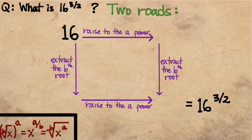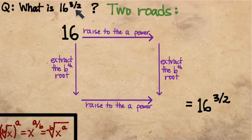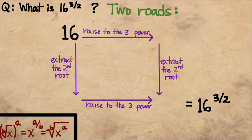But the path that we walk down is very different depending on how we do this. So let's apply it to the example of 16 to the 3 halves, where the denominator, the index of the root, is 2, and the numerator, the power that we raise to, is equal to 3. So the two steps that we're thinking about are raising numbers to the third power and extracting the second root, or the square root.